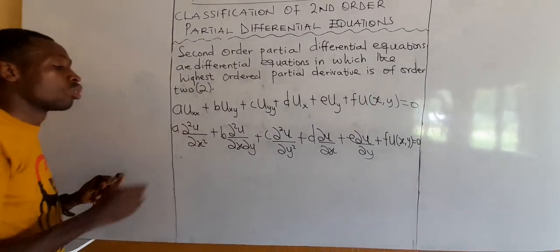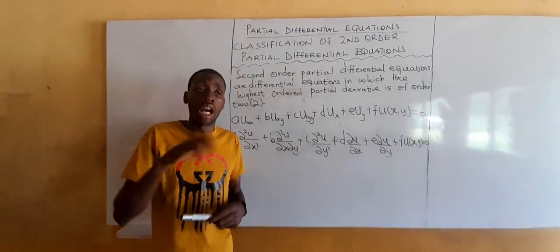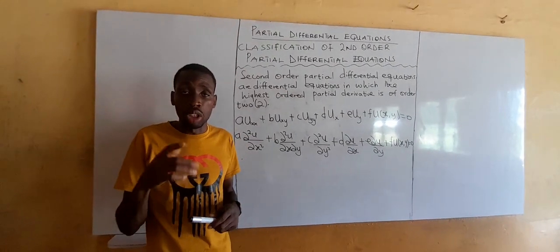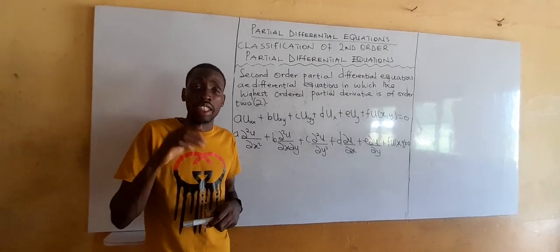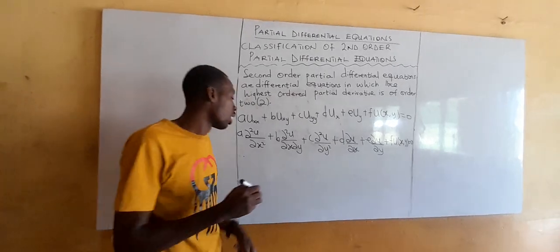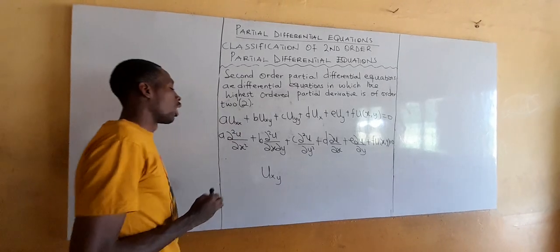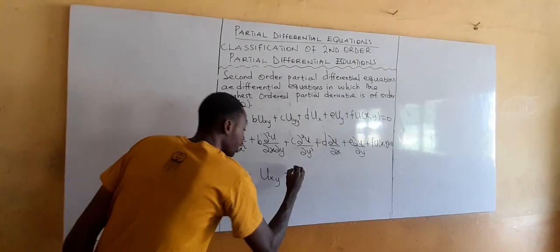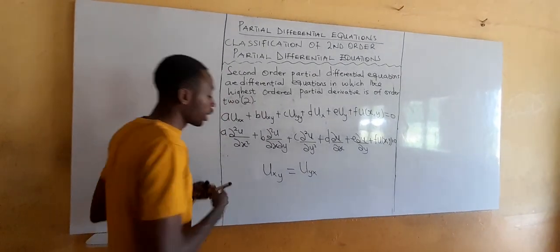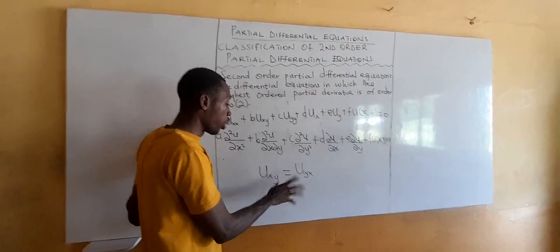Now, we learned something in our series — one of our videos — which is Young's theorem. If you have not watched that video, please go to YouTube and search for it. Young's theorem tells us that the partial derivative of U with respect to x then with respect to y will be the same as the partial derivative of U with respect to y then with respect to x. They are the same.